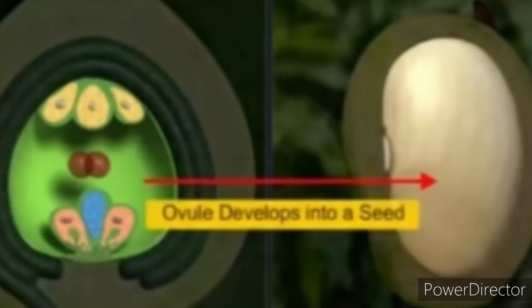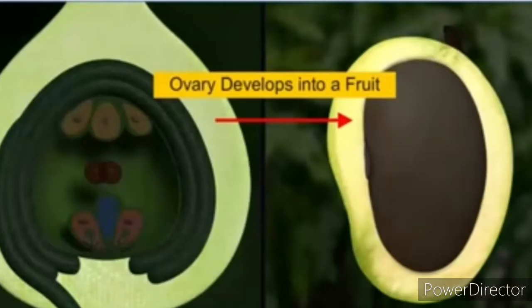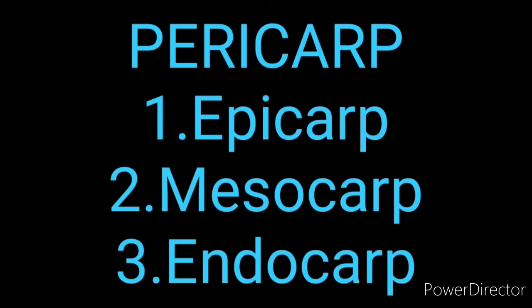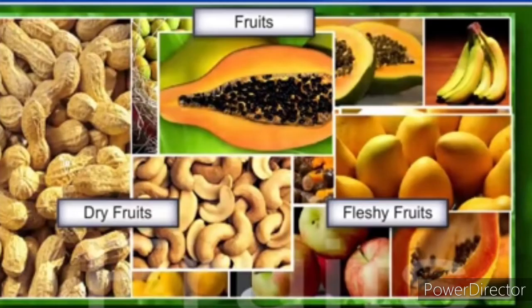As the ovules mature into seeds, the ovary develops into a fruit. The transformation of ovules into seeds and the ovary into fruit proceeds simultaneously. The wall of the ovary develops into the wall of the fruit called the pericarp, consisting of epicarp, mesocarp, and endocarp. The fruits may be fleshy or dry.